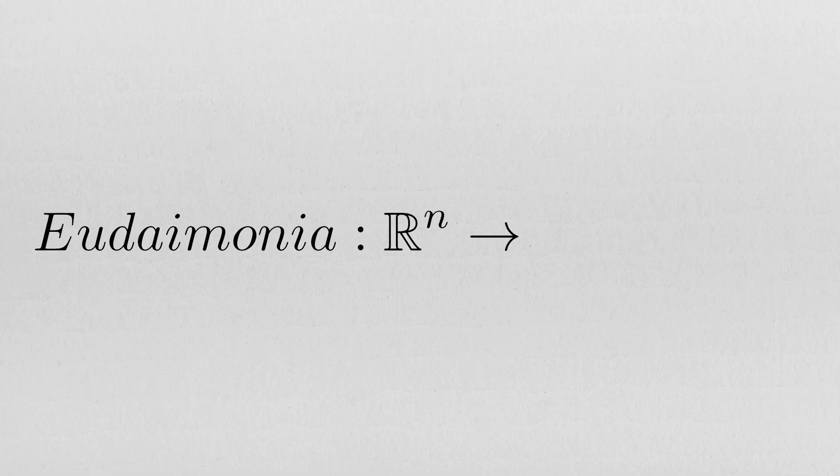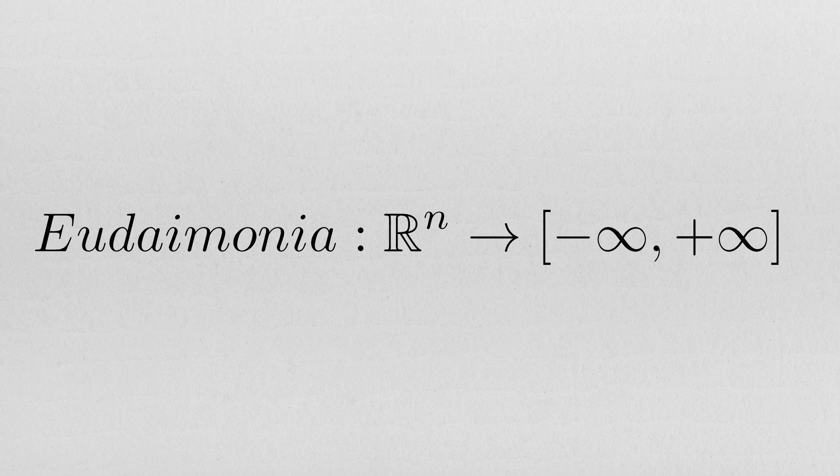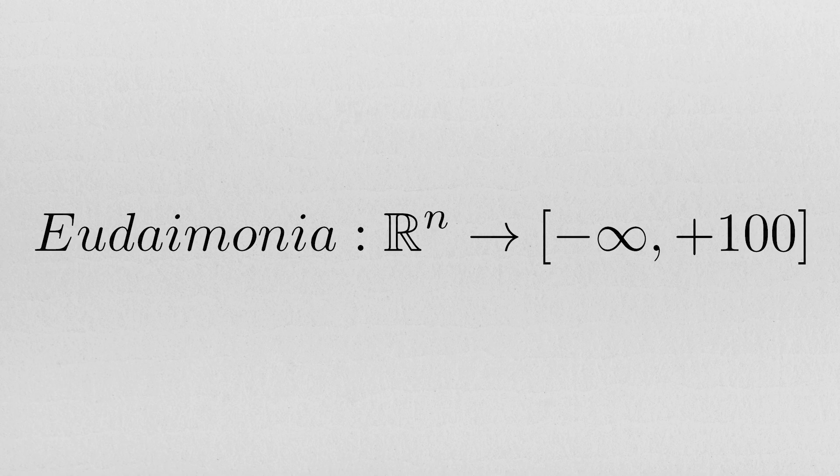Sometimes utilitarians consider individual well-being to be able to increase indefinitely. In other words, they may say that the range of a eudaimonic function goes from minus infinity to plus infinity. In our framework we will instead cap utility from above.